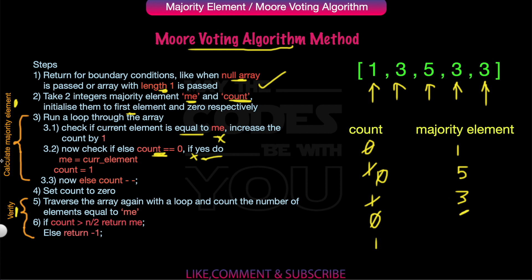We now have our majority element candidate: 3. We no longer need count, so we reset it to 0. We then traverse the array again, counting occurrences of me. Element 3 appears three times and n/2 = 2.5, so 3 is a majority element and we return it. If it were not a majority element, this verification step would return -1.